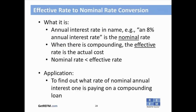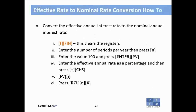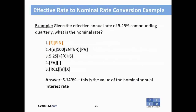To convert from effective to nominal rate: enter the number of periods per year and press N; enter 100, press Enter and PV; enter the effective annual rate as a percentage, press plus and change sign; press FV and I; then recall N and press multiplication. Example: given an effective annual rate of 5.25% compounding quarterly, enter 4, N; 100, Enter, PV; 5.25% plus and change sign; FV; I; then RCL N and multiplication. The nominal rate is 5.149%, assuming quarterly compounding.